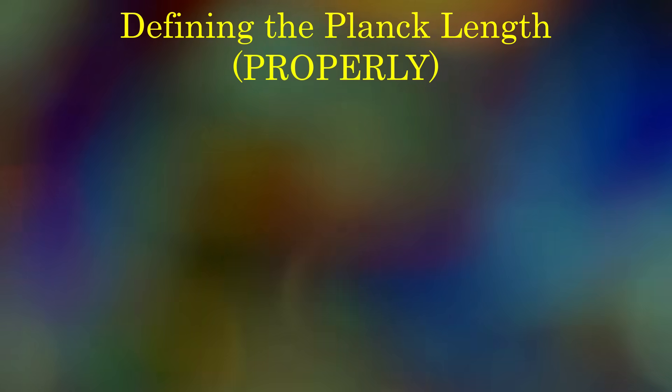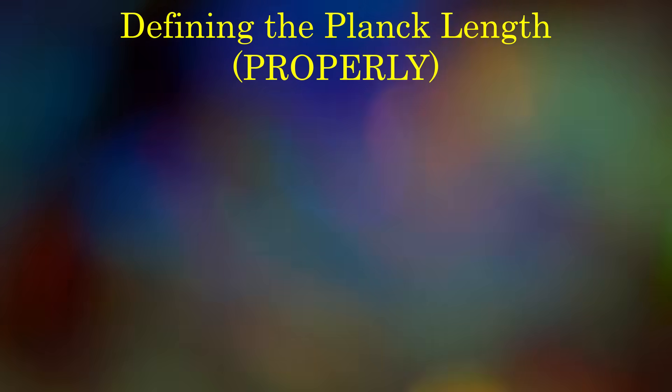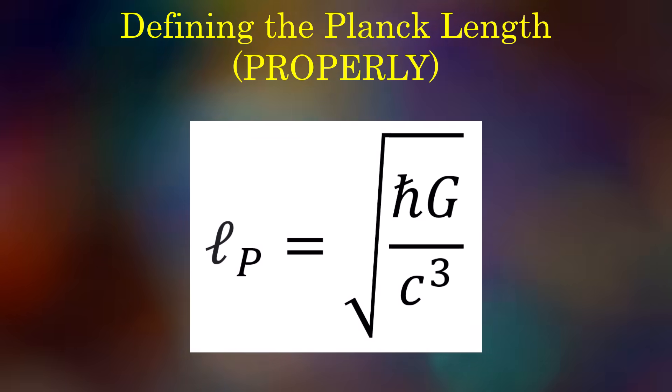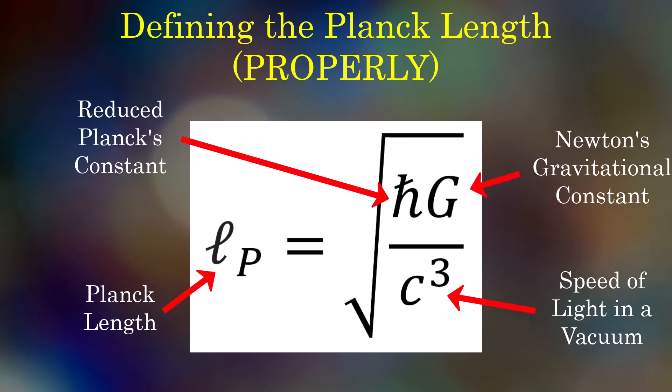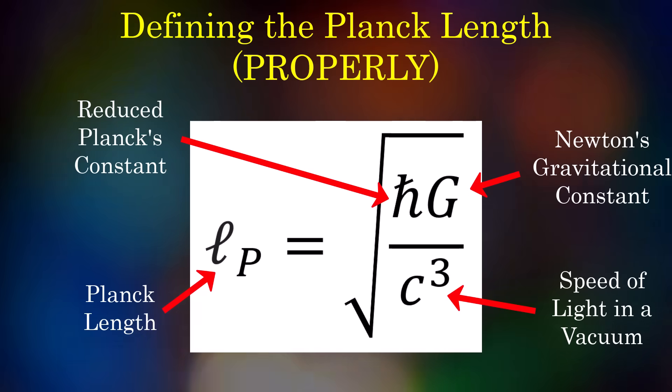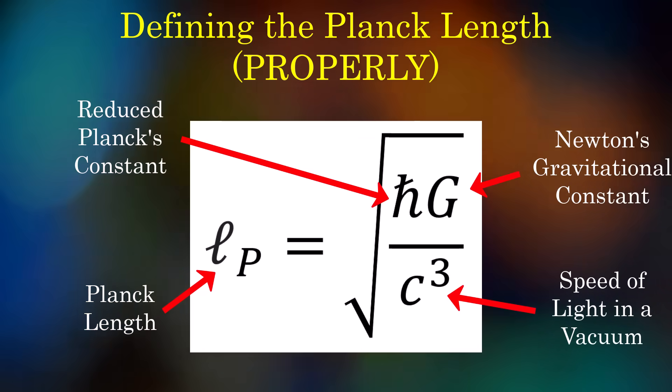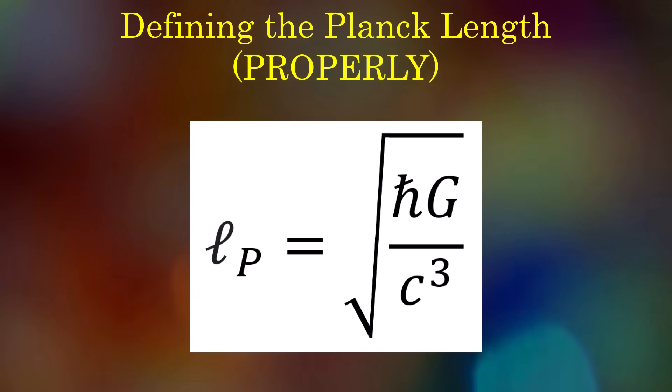Let's begin with how we actually arrive at the Planck length. Most surface level videos will simply state that it's derived through combining a few fundamental constants in such a way that the end result has dimensions of length. This is only half true, but it doesn't really give the physical motivation for the Planck length, instead making it seem more like an arbitrary length you can get through carefully manipulating other constants of nature.